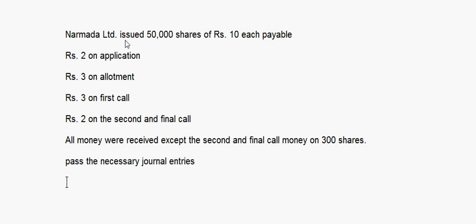All shares were subscribed — this is a fully subscribed case. First, you write bank account debit, to share application account: 50,000 into 2 equals 1 lakh. Then share application account debit, to share capital account: again 1 lakh.